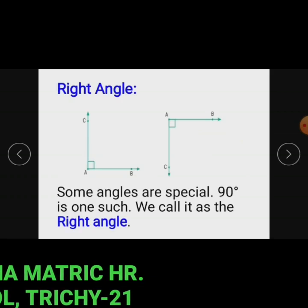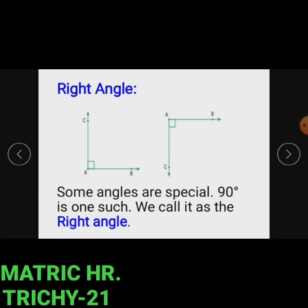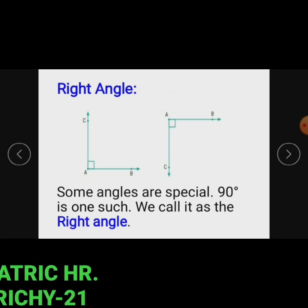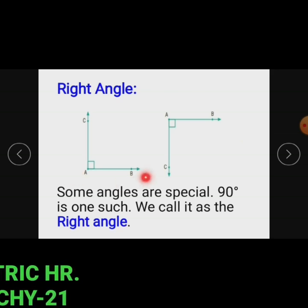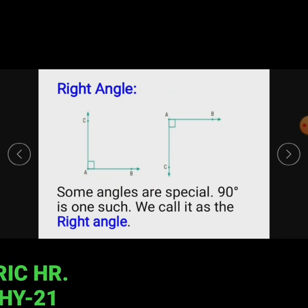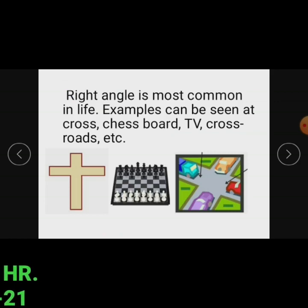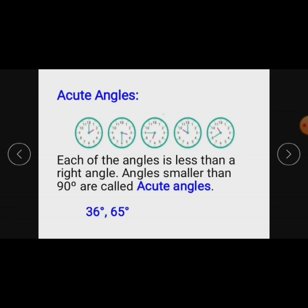Special angles: some angles are special. 90 degrees is one, which we call the right angle. The right angle is most common in life — examples can be seen at crossroads, chess boards, TVs, and crossroads.